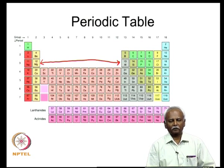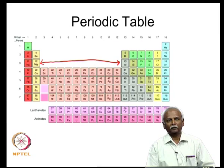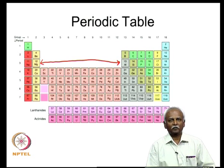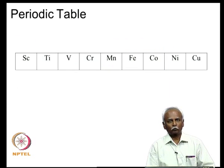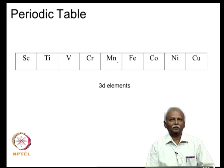If you look at the complexes that are formed, you can notice that they are all homoleptic complexes that can be generated using carbon monoxide. This is probably unique to carbon monoxide — not all other ligands encountered in organometallic chemistry can form homoleptic complexes. By homoleptic complexes, we mean those metal complexes in which only one ligand is involved in the coordination sphere of the metal.